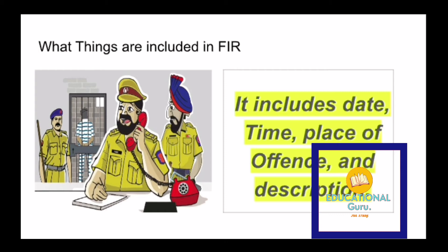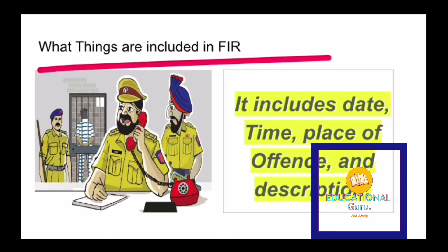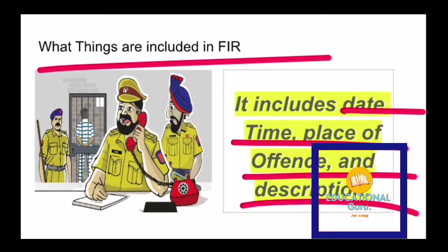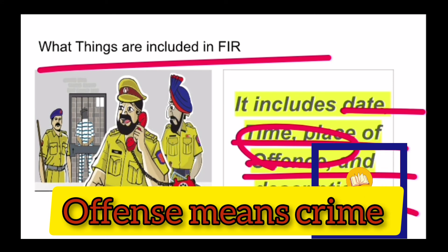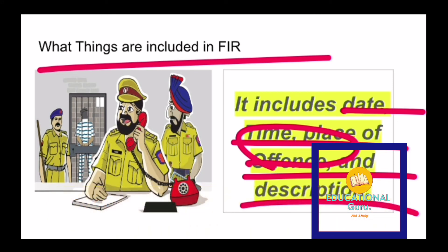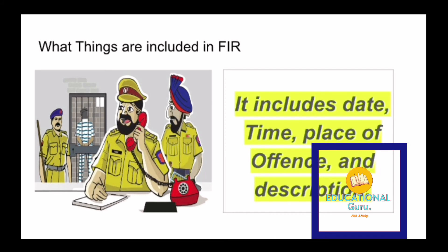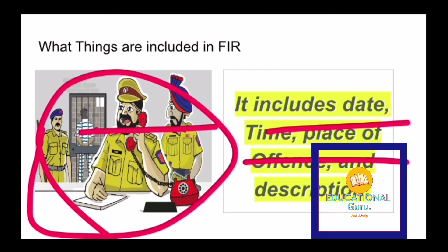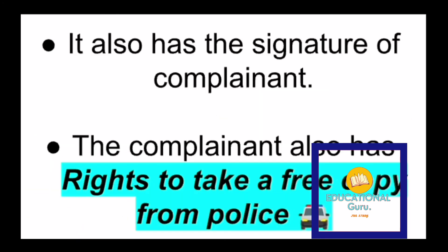The things included in an FIR are: date, time, place, offense, and description. Offense means any crime. The description is optional, but the date, time, and place of the offense are really important in any written FIR. You can see the police officer writing an FIR of the person who has committed the crime.